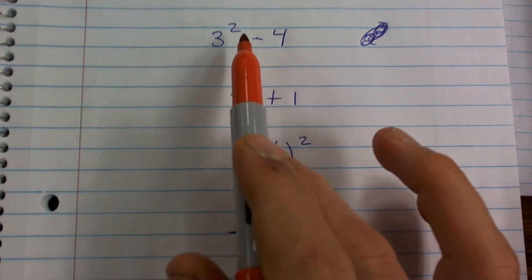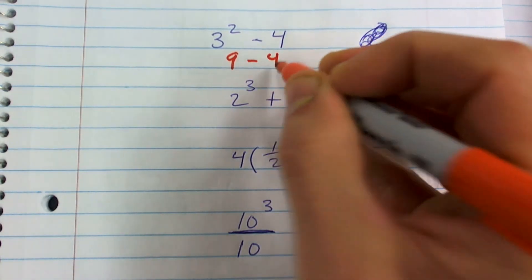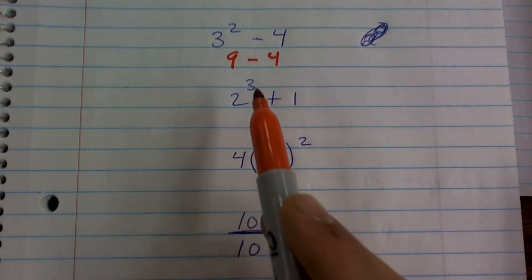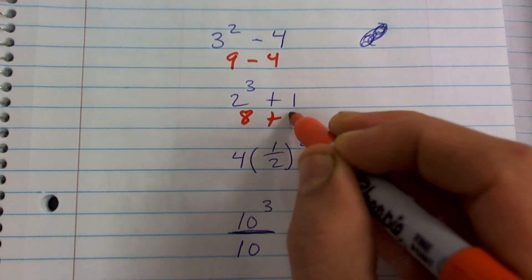So here I have 3 squared, which is going to be 9 minus 4. Here I have 2 cubed, which means 2 times 2 times 2. Well, 2 times 2 is 4, times 2 again is going to be 8 plus 1.